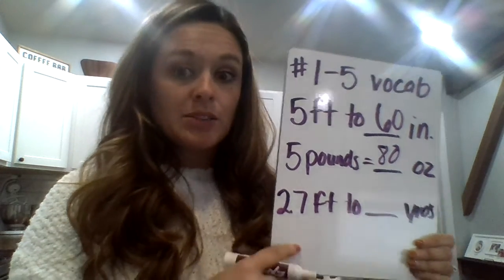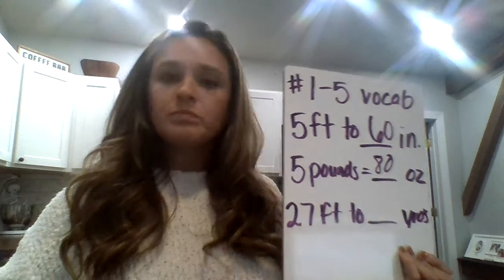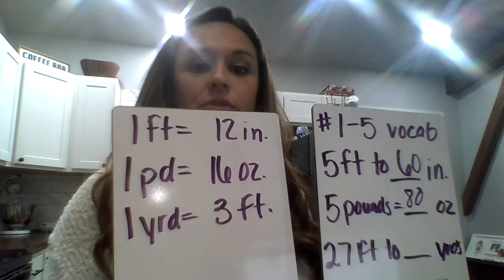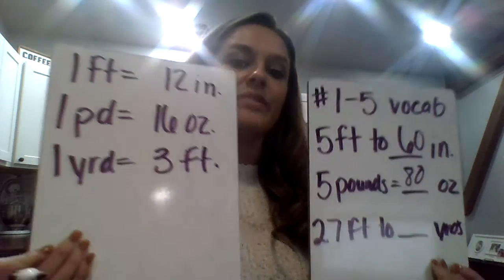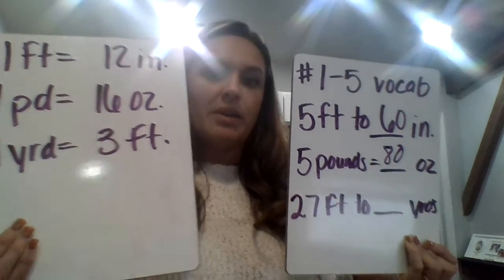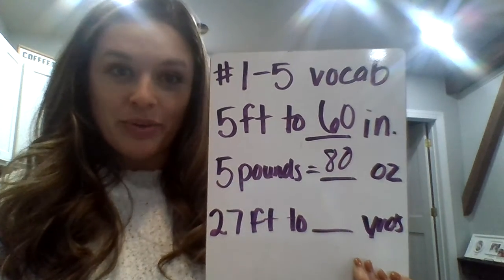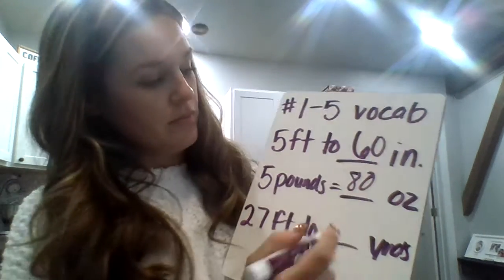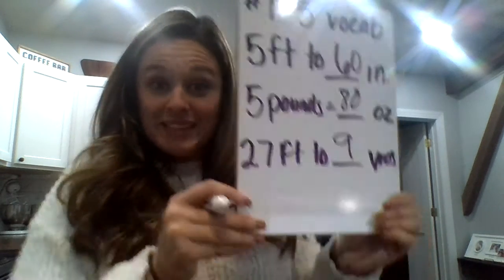And then the last one — 27 feet to blank yards. One yard equals three feet. This one's a little bit different because we're going the opposite direction, so we're actually going to have to divide 27 by 3. 27 divided by 3 is 9 yards. That's it. All you have to do is look at the vocabulary now, because I went over the other three questions with you.